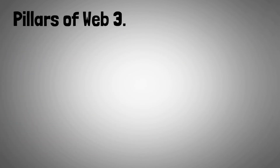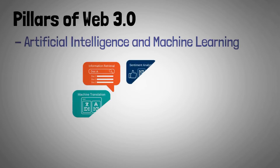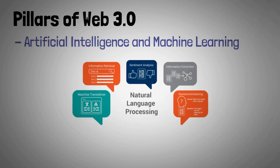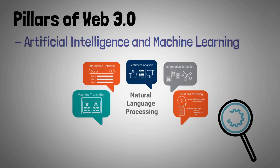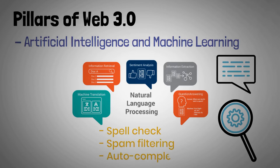The pillars of Web 3.0 include artificial intelligence and machine learning. Web 3.0 is built on natural language processing (NLP), which allows the web to analyze and interpret spoken and written words. NLP is used for spellcheck, spam filtering, and autocomplete.